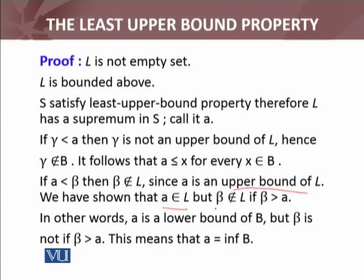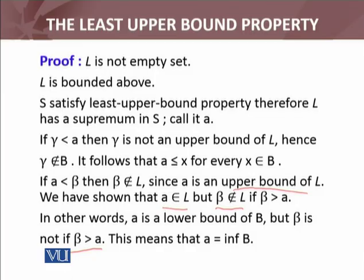By the definition of L, since A is an upper bound of L, we have shown that A belongs to L. But beta does not belong to L if beta is greater than A — if beta is greater than A, then A will be in L but beta cannot be in L by construction. In other words, A is a lower bound of B, but beta — which is greater than A — is not. This is exactly the definition of infimum, so A is the infimum of set B. This is what we had to prove.